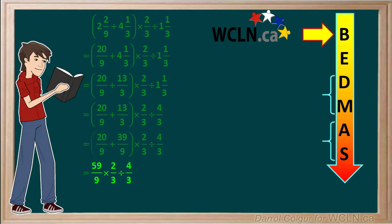We've now finished with the operations inside the brackets, so we can move down to exponents. There are no exponents in this problem, so we can move down to multiplication and division.